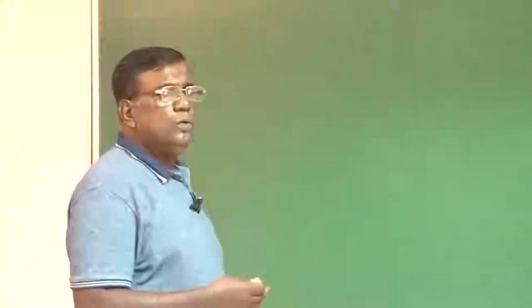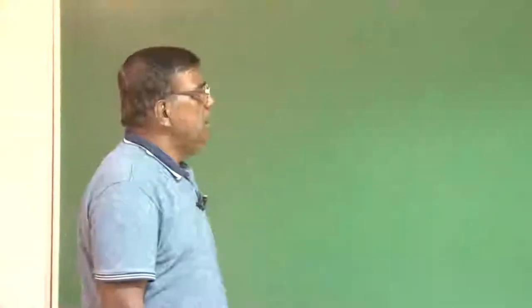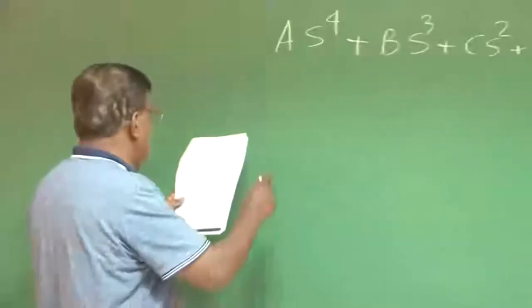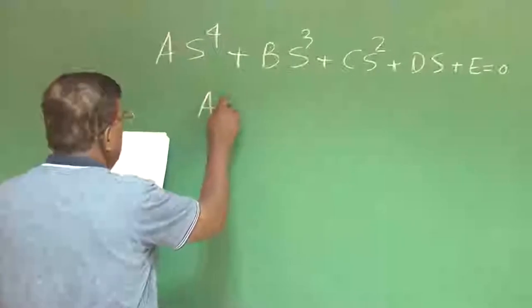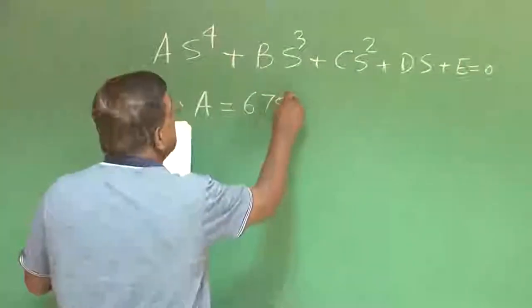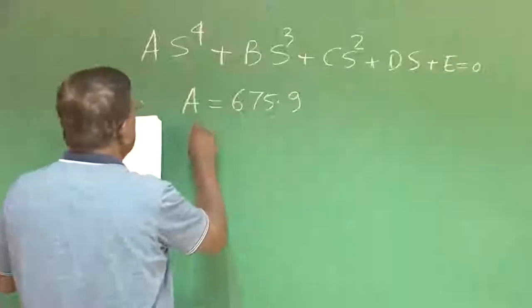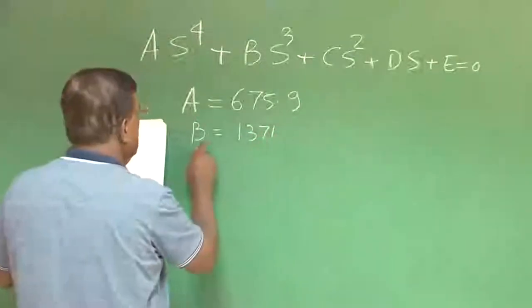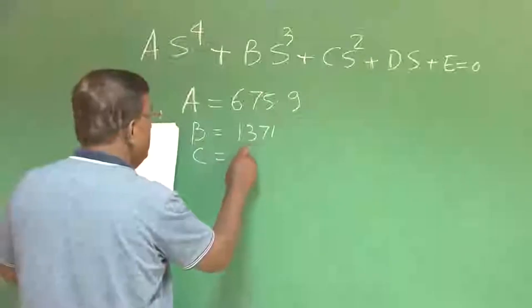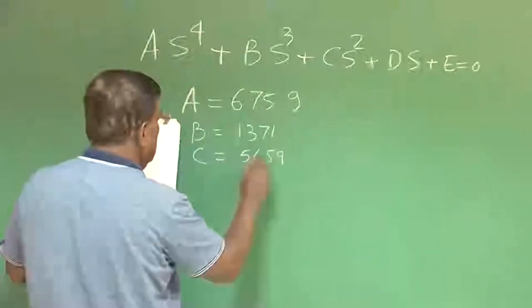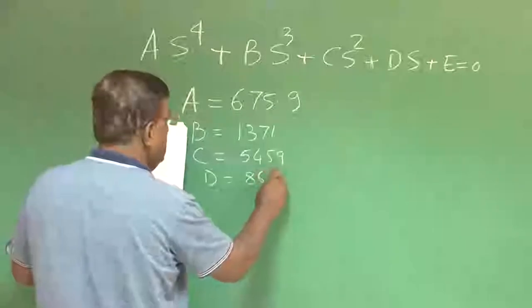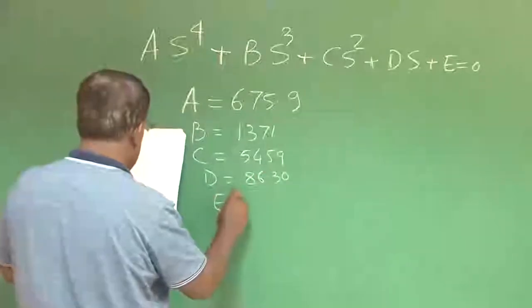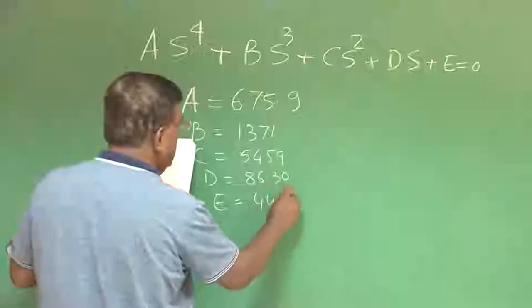We will now try to visualize this through the example discussed yesterday. For a business jet airplane, let the values be: A = 67.9, B = 1371, C = 5459, D = 86.30, and E = 44.78.